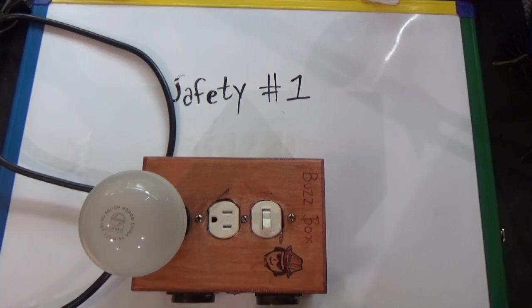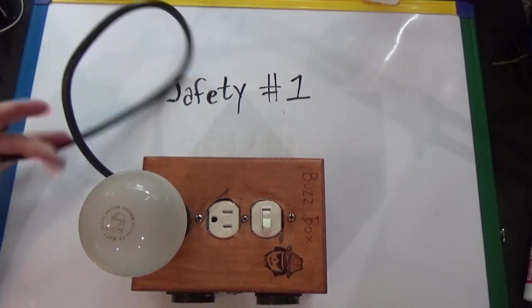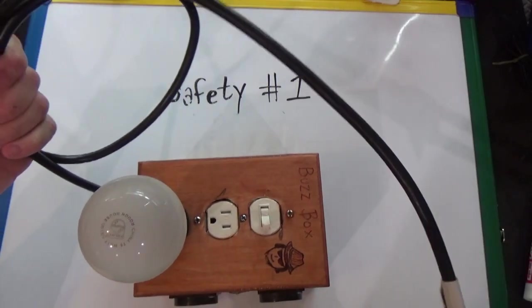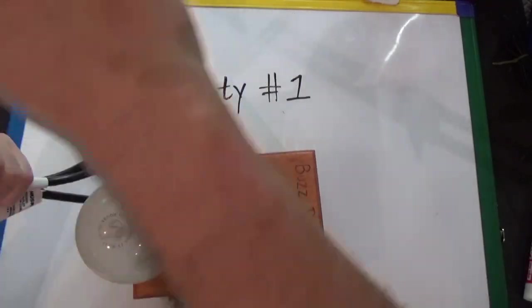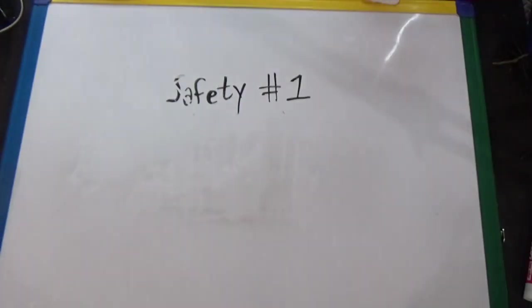So always use a dim bulb tester and a variac on a piece of new equipment. There's other things that you could do from a testing perspective. When you get a new piece of equipment, like a radio, you always want to ohm out the coils. You want to make sure the coils are good before you proceed. If the coils are bad, what's the sense? You're not going to be able to replace them or you're going to have to rewind them first.